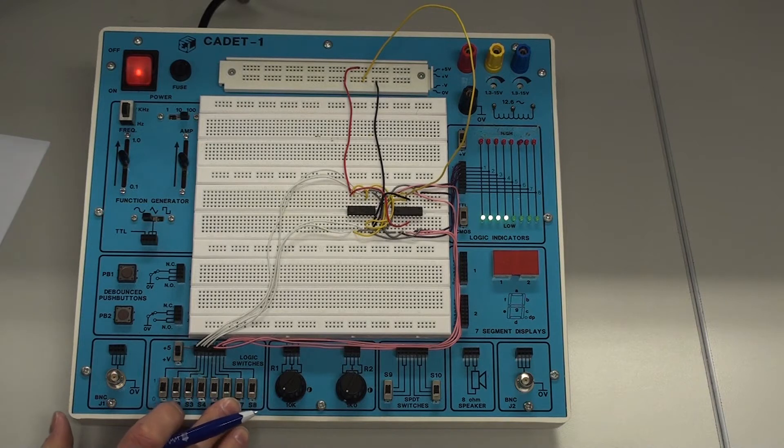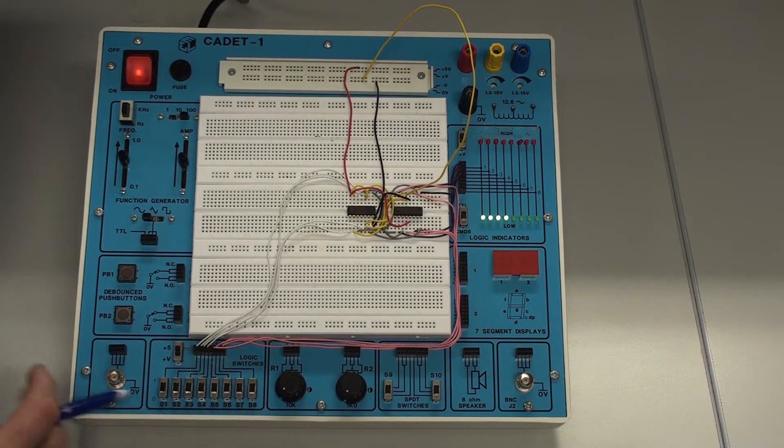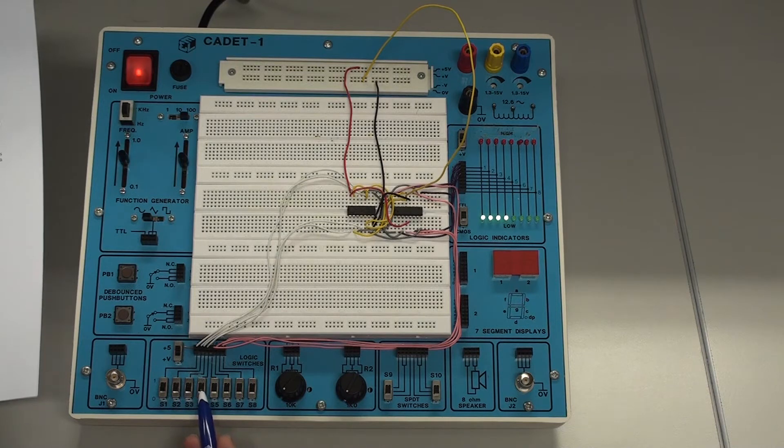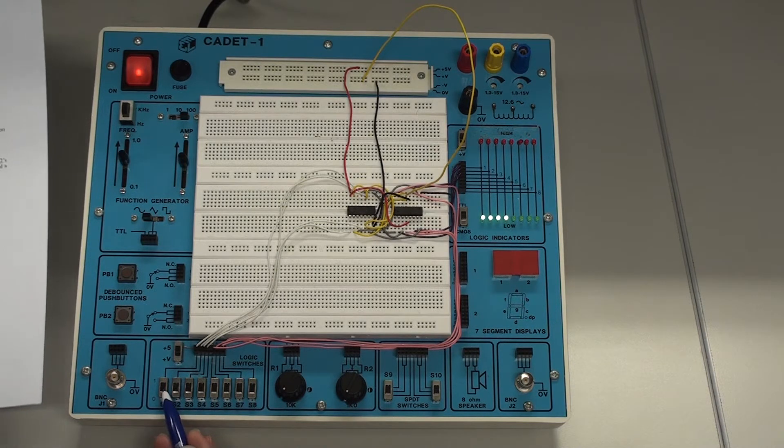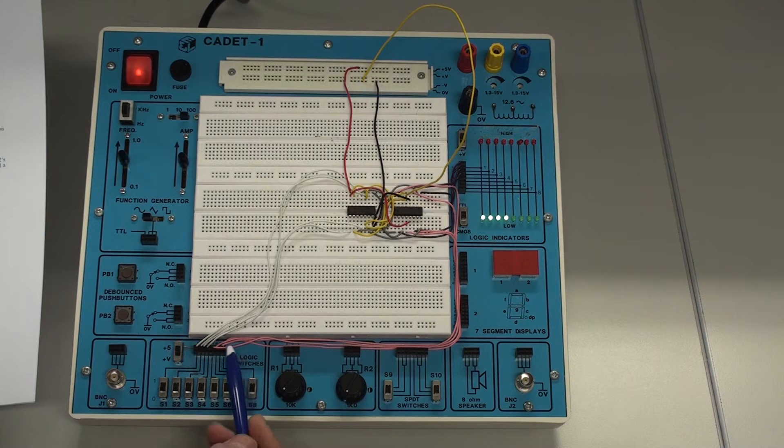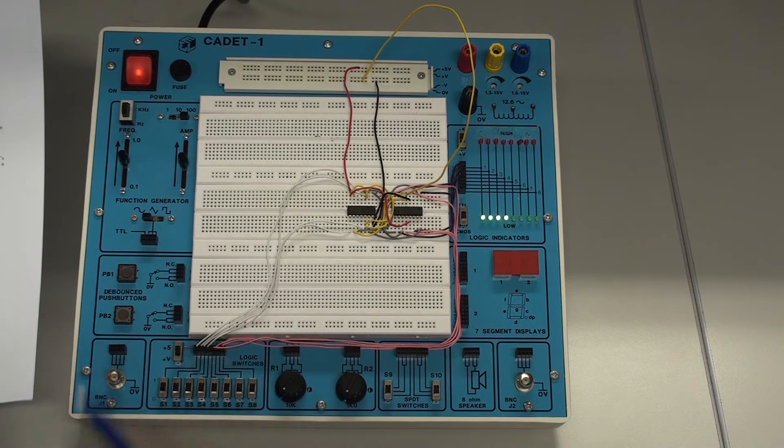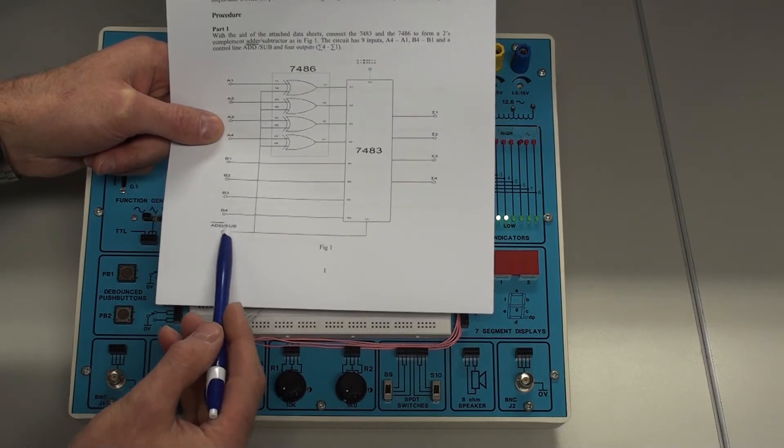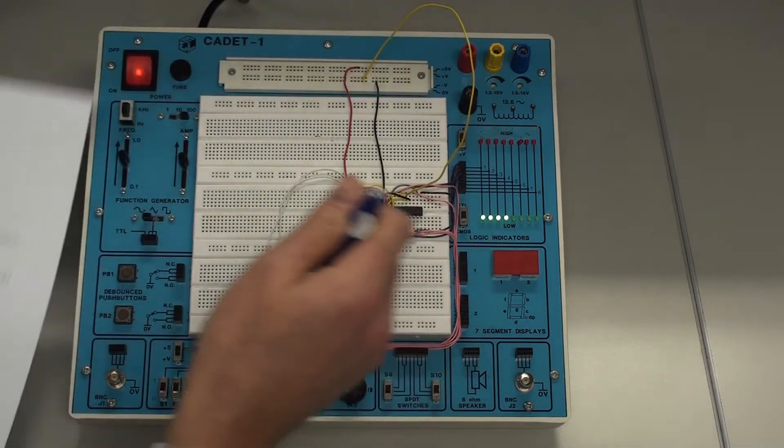Down here we have the input switches. From this switch up to this switch here is going to be our B1 to B4, and the remaining 4 switches then from here up to here are the A inputs A1 to A4. And you can see I just use a different color, the pink for the B and white for the A's. The control line, the add subtract line is this.